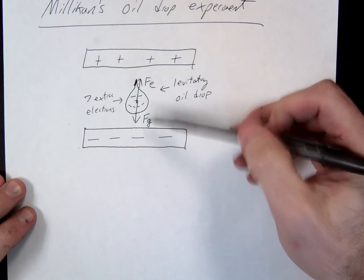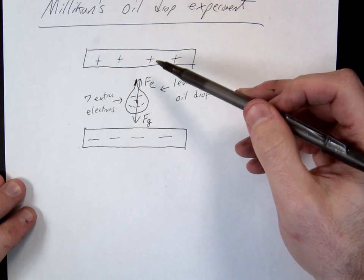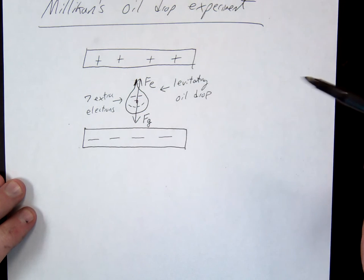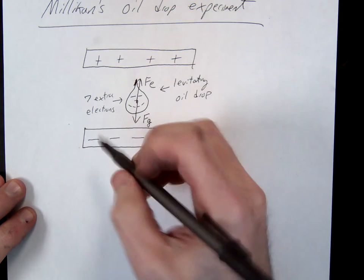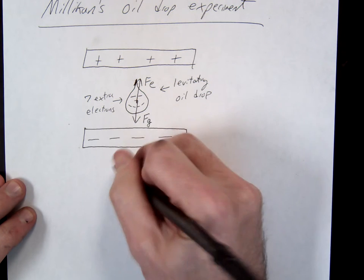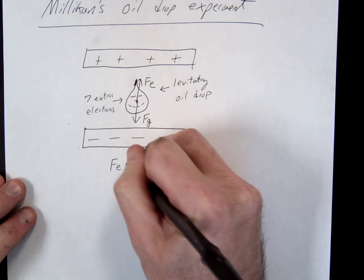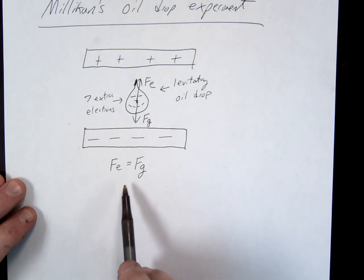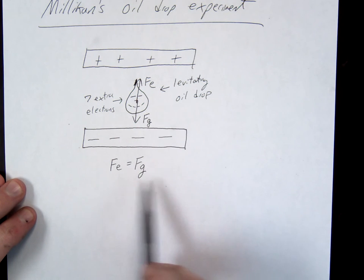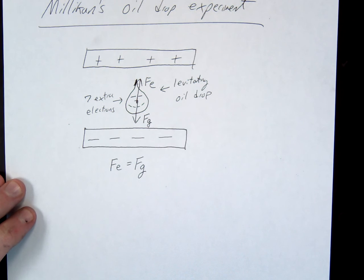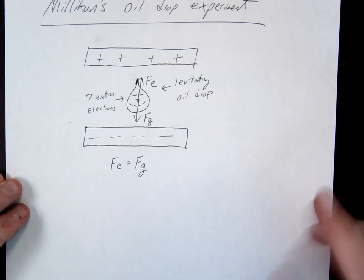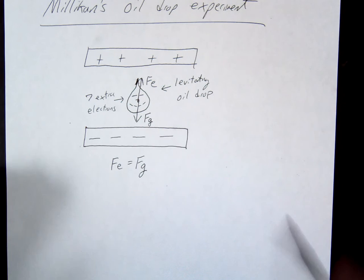There's a force going up and a force going down, and if we want this to levitate, what should be true about those two forces? They should be equal. So that's one of the big ideas here: we want the electric force to equal the gravitational force.